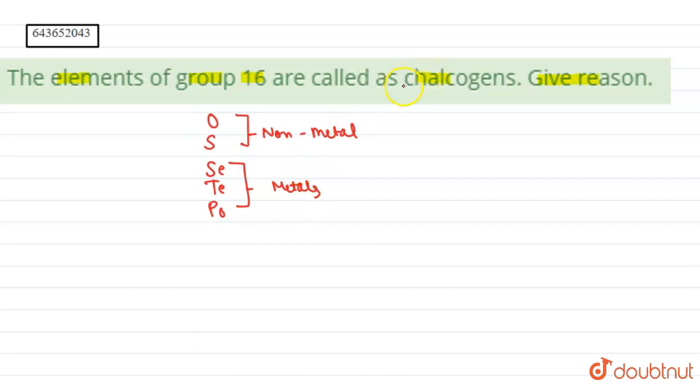These are known as chalcogens. The reason is that chalco means copper in Greek, while genes means producer.